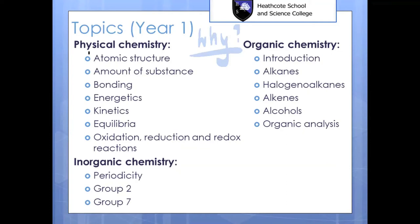When you look at the titles for the first year, you can see a lot of very familiar things: atomic structure, amount of substance (which is quantitative chemistry and calculations), bonding, energy in reactions (exothermic and endothermic reactions), kinetics (the rate of reaction), and equilibria. A lot of these you already know, so we will go back to what you learned in GCSE, learn a little bit more, tackle harder examples, and answer the question why.